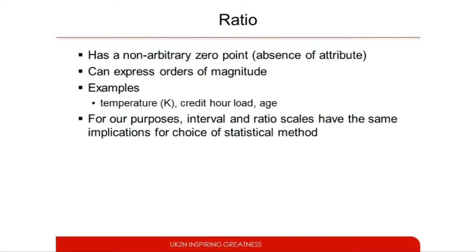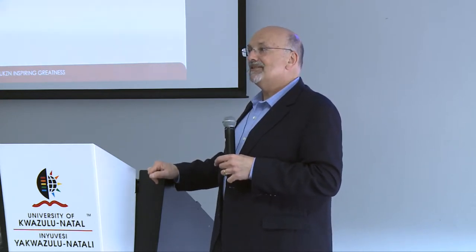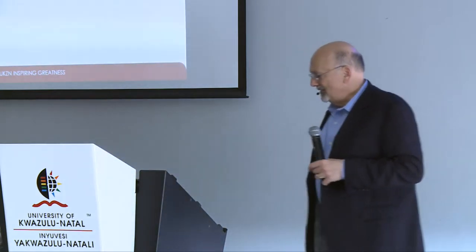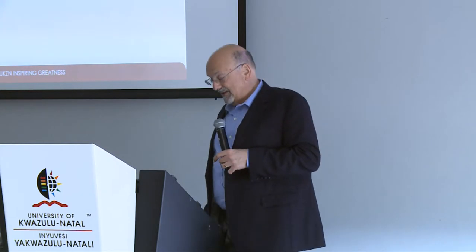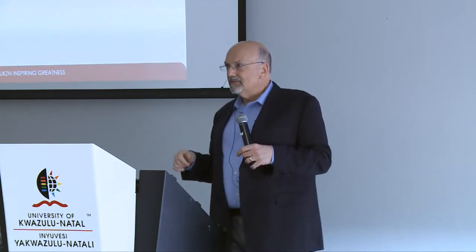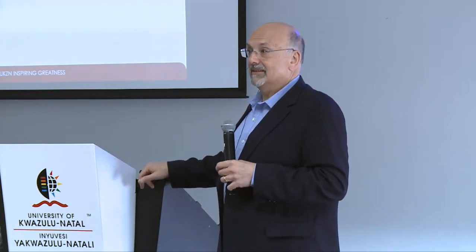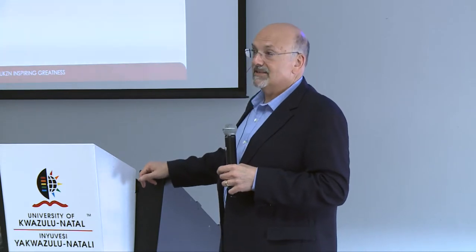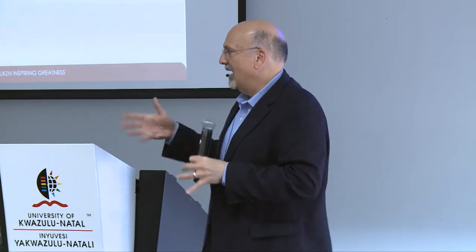Finally, ratio: that's where you've got everything — a meaningful zero and meaningful intervals. With zero, you can express magnitude, which you can't do with an interval scale. You cannot say 20 degrees is twice as hot as 10 degrees because 10 degrees would then be infinitely hotter than zero degrees. But weight is a ratio scale — weighing 20 kilos is genuinely twice as much as 10 kilos. In statistics, however, interval and ratio are generally treated the same way.